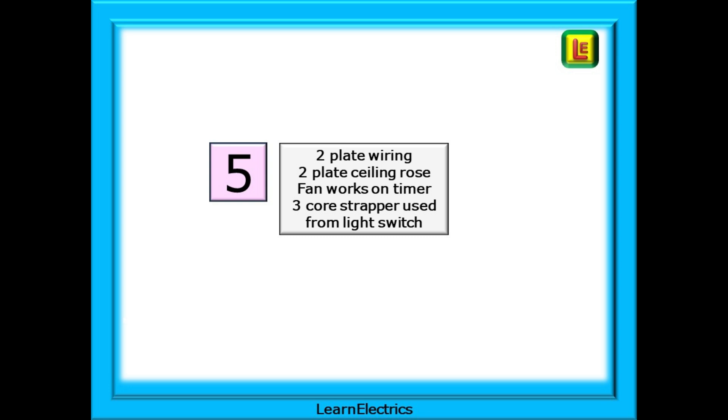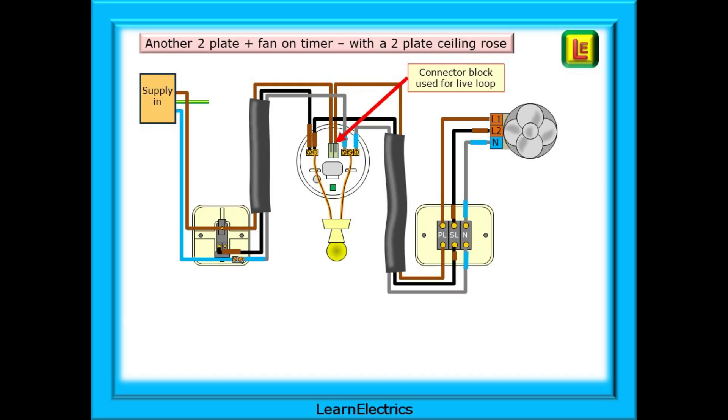What can we do if it's a two plate lighting circuit and it's not possible to change the existing two plate ceiling rose? If we can run a new three core and earth strapper cable from the light switch to the ceiling rose we now need somewhere to connect the permanent line. We can use a connector block, WAGOs or similar to do this.